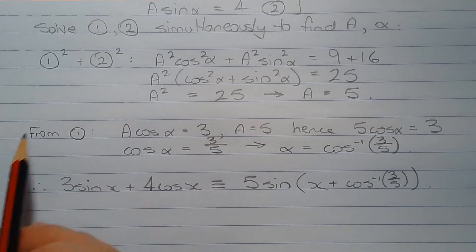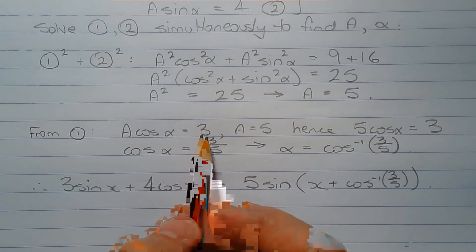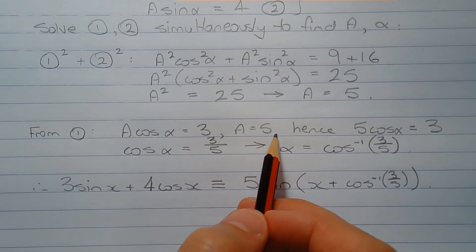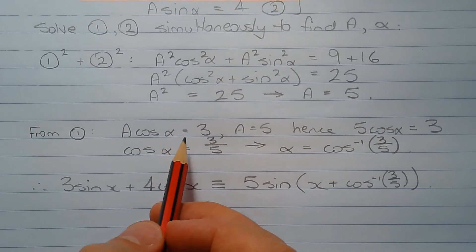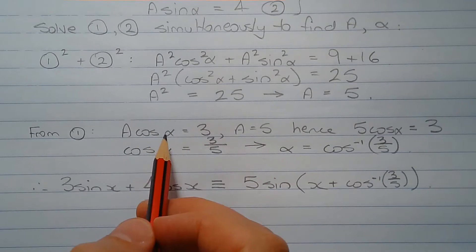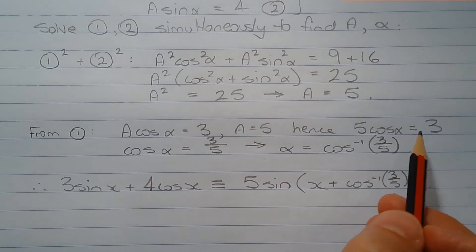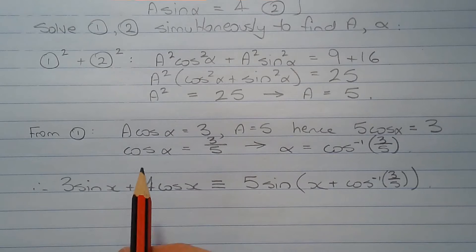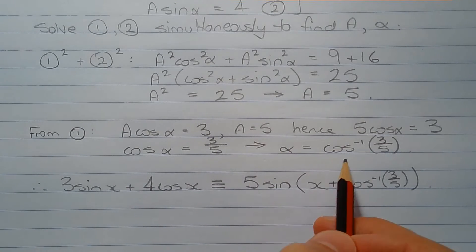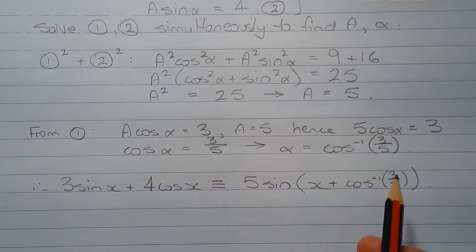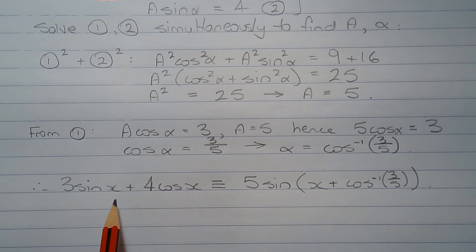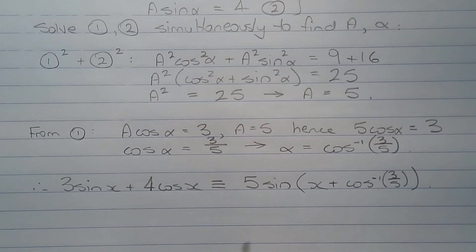From equation 1, A cos α = 3, and substituting A = 5 gives 5 cos α = 3. Dividing both sides by 5, cos α = 3/5, therefore α = arccos(3/5), left in exact form. Therefore, 3 sin x + 4 cos x ≡ 5 sin(x + arccos(3/5)).